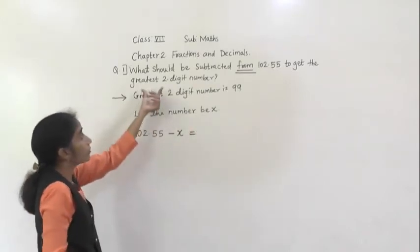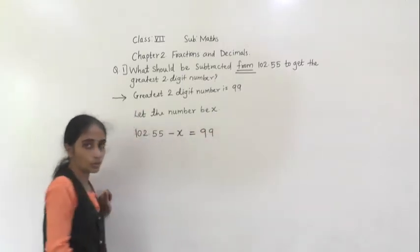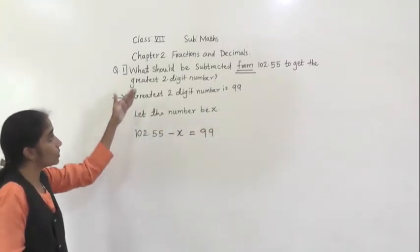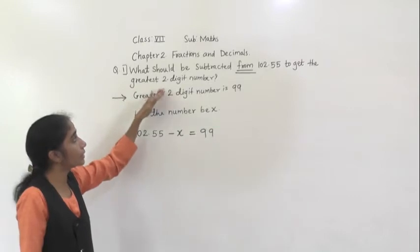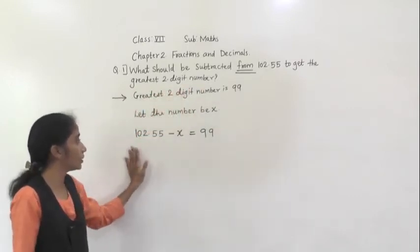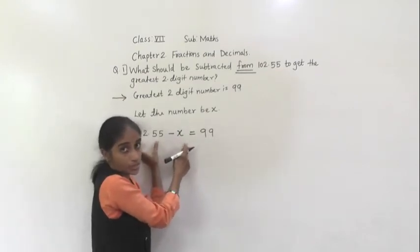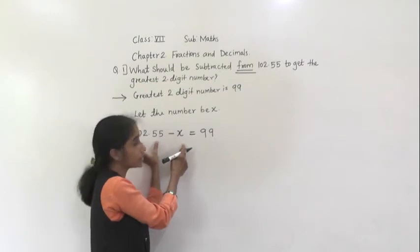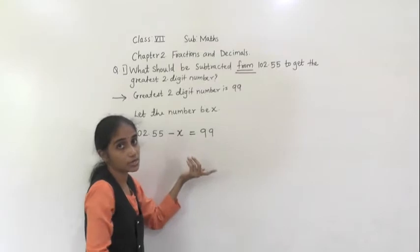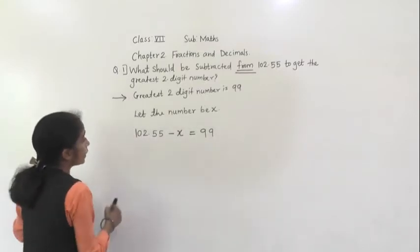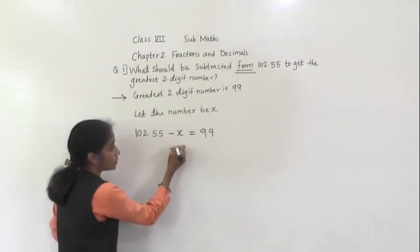To get the greatest two-digit number, which is 99. So now, minus X will keep as it is. This number is here. Which sign is here? Plus sign. If we transfer to that side, it will become minus. So minus 102.55.